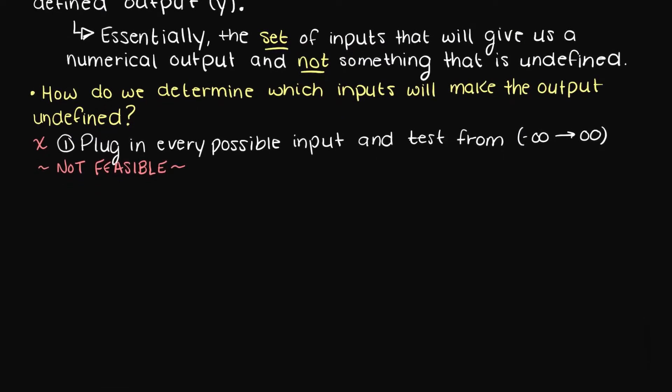So, how do we quickly identify which inputs will make our function fail? Well, we're smart people, so we list the reasons why an output could not be achieved.